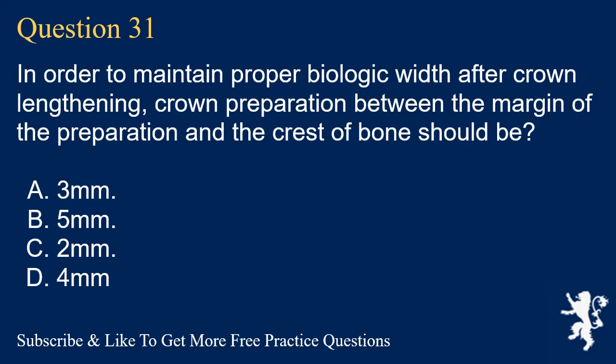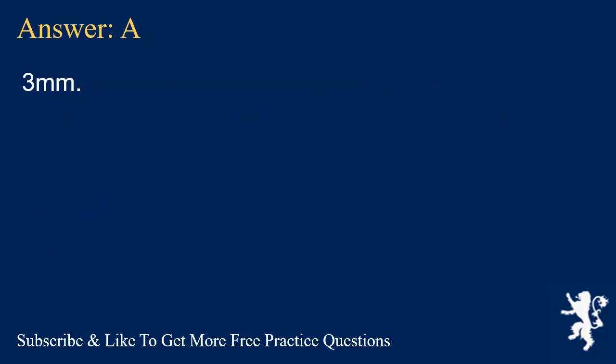Question 31. In order to maintain proper biologic width after crown lengthening, crown preparation between the margin of the preparation and the crest of bone should be? A. 3 mm. B. 5 mm. C. 2 mm. D. 4 mm. Answer: A. 3 mm.